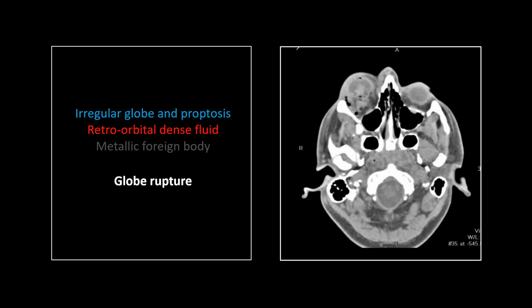So, a globe rupture — you got to have one of these. People in academic circles don't talk about whether you have a foreign body to the orbit, but how good is it and what is it? The most important thing I want to point out about the globe — and this is an extreme example — but it should be perfectly round. The smallest defect in its contour in a trauma, you should be considering calling a globe rupture. I've been amazed at the kinds of calls I've seen many radiologists that are better than I make with regard to globe rupture.